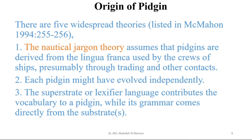The Nautical Jargon theory assumes that Pidgins are derived from the Lingua Franca used by the crews of ships, presumably through trading and other contacts. Nautical means sea — when the crews on ships had to contact with other people or sailors, they developed this Pidgin. Each Pidgin might have developed independently, and the theory propounds that each of these Pidgins developed independently.